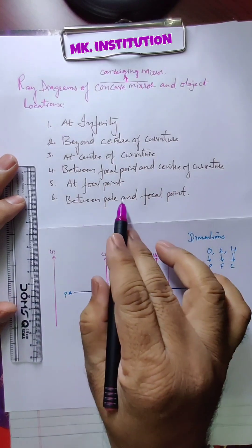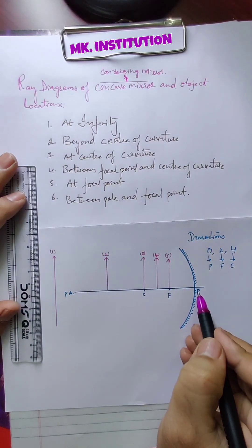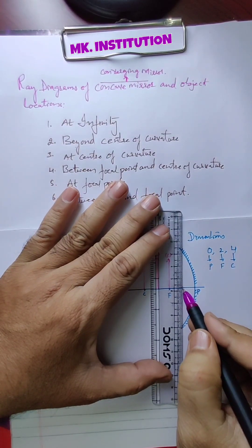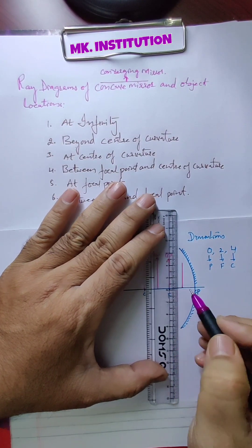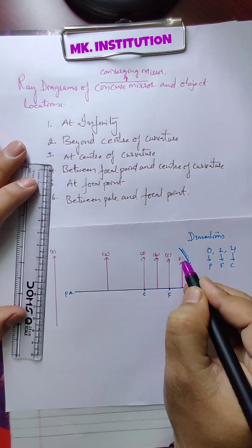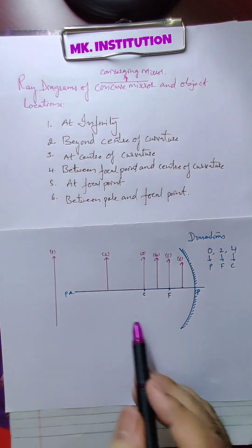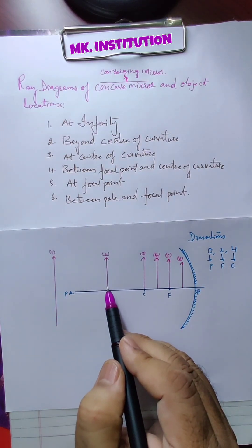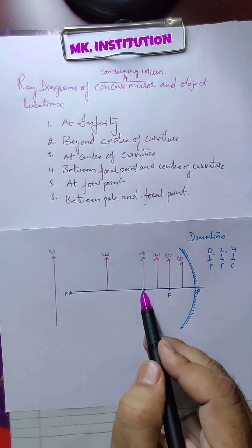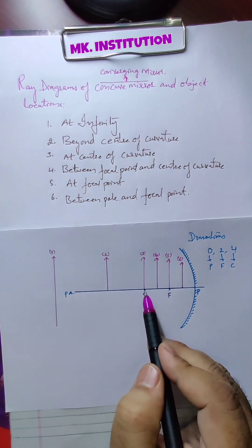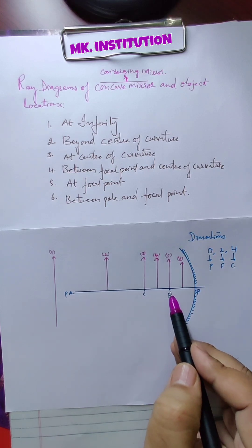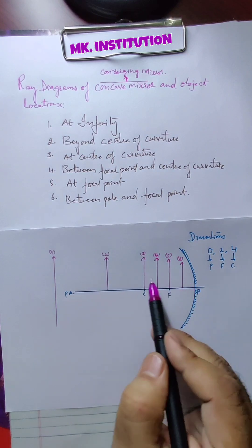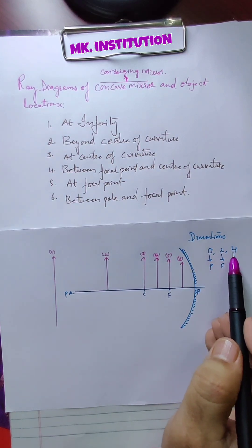Now what is the last one? Between pole and focal point — here in the middle, this is the sixth situation. These are the object locations: at infinity, beyond center of curvature, at center of curvature, between focal point and center of curvature, at focal point, between pole and focal point. These are the six locations. The dimensions you have to take are 0 to 4.